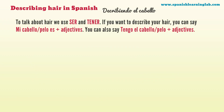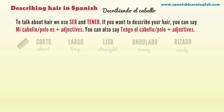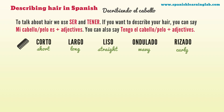To talk about hair in Spanish, you can use the verbs ser and tener. If you want to describe your hair, you can say mi cabello es plus adjectives, or mi pelo es plus adjectives. Pelo and cabello mean the same. If you prefer to use tener, then you can say tengo el cabello plus adjectives or tengo el pelo plus adjectives.